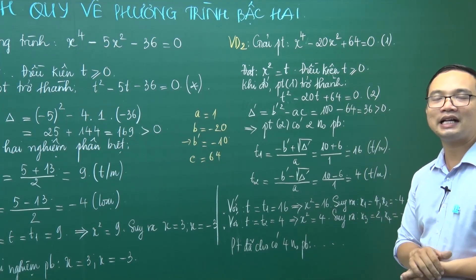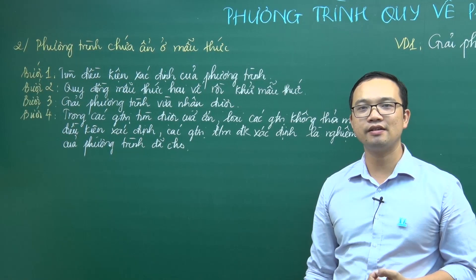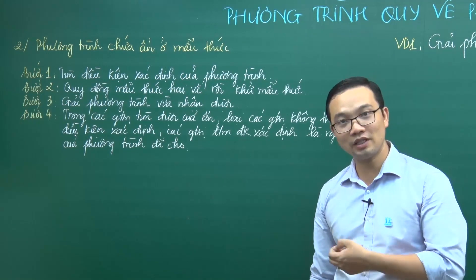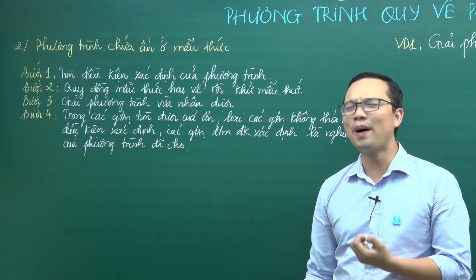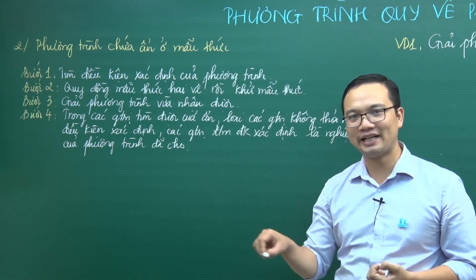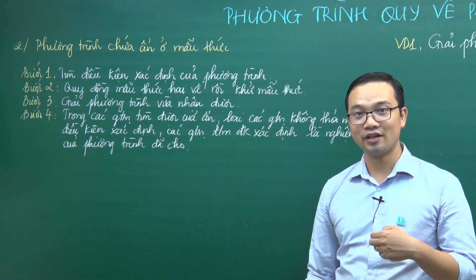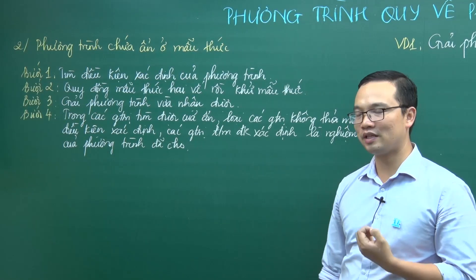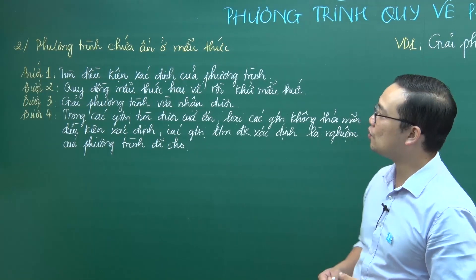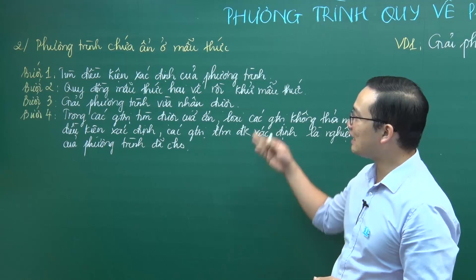Phần thứ 2 là phương trình chứa ẩn ở dưới mẫu thức. Các bạn chú ý: ẩn ở dưới mẫu thức, chứ không phải chỉ là có mẫu. Ví dụ 1/2 cũng có mẫu nhưng bây giờ ẩn x chui dưới mẫu. Phương trình dạng này chúng ta đã học cách giải từ lớp 8. Giờ chúng ta nhắc lại 4 bước giải.